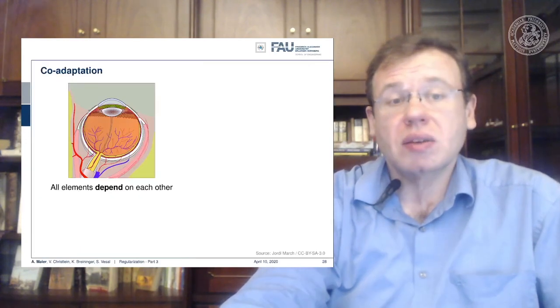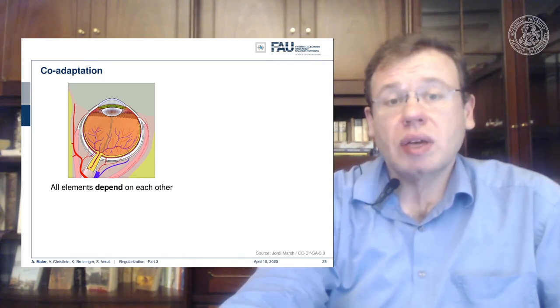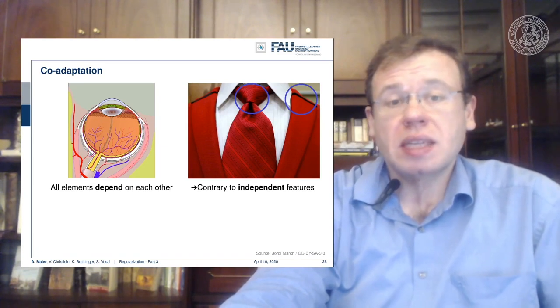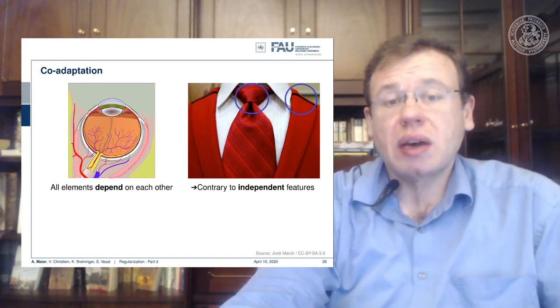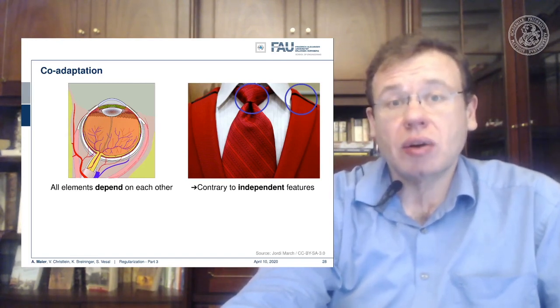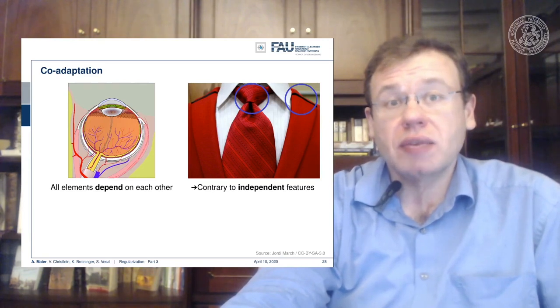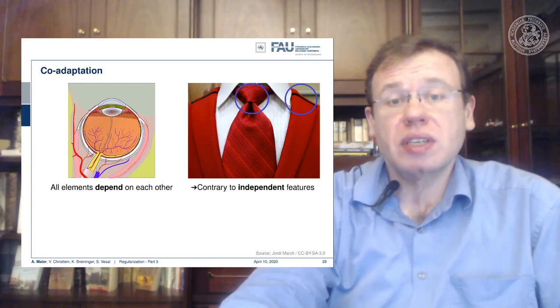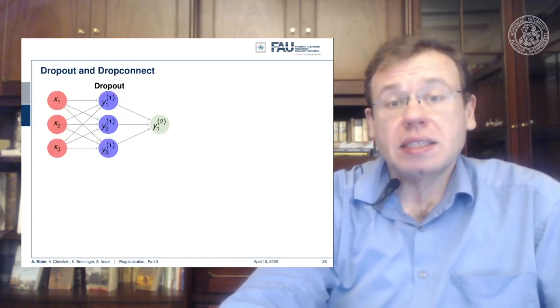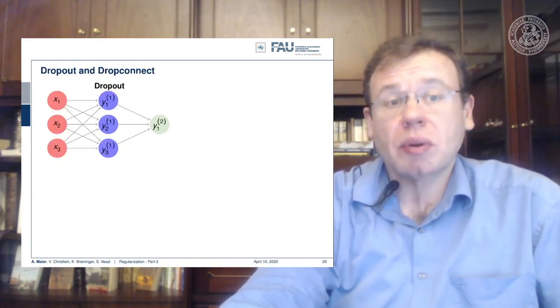And one thing that you may want to consider is all of the elements during training, of course, they depend on each other. So if you have correlated inputs, then also the adaptation will run in a similar way. But if you want to have independent features that allow you to recognize different things, then you somehow have to break the correlation between the features. And this can actually be performed by dropout.